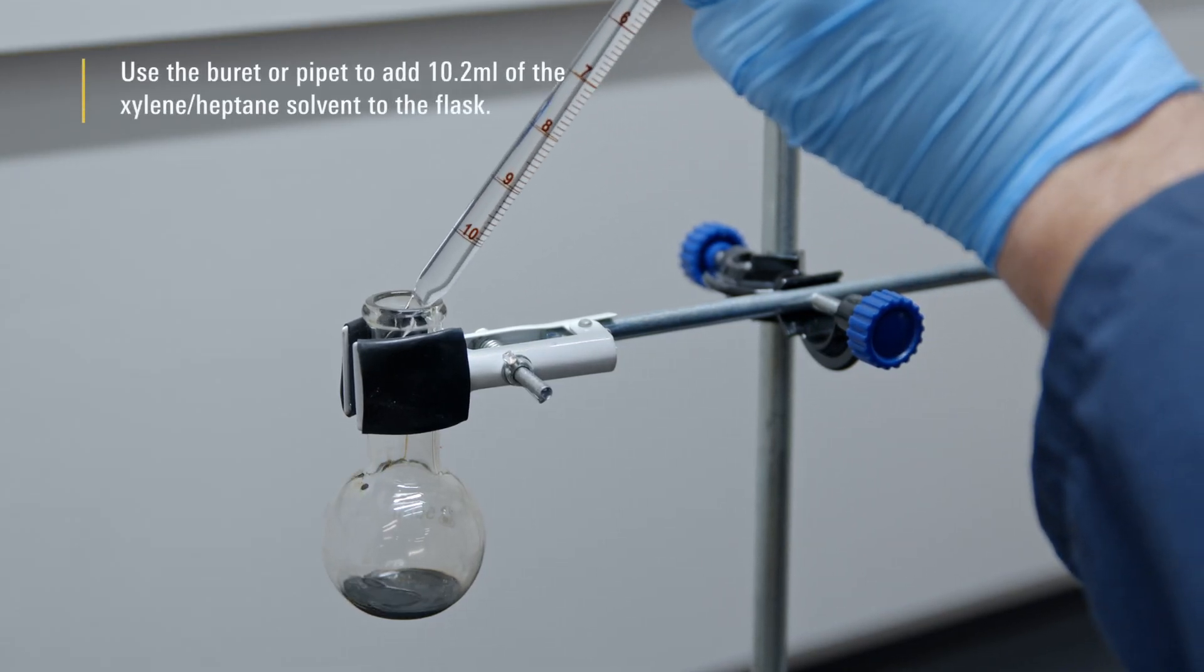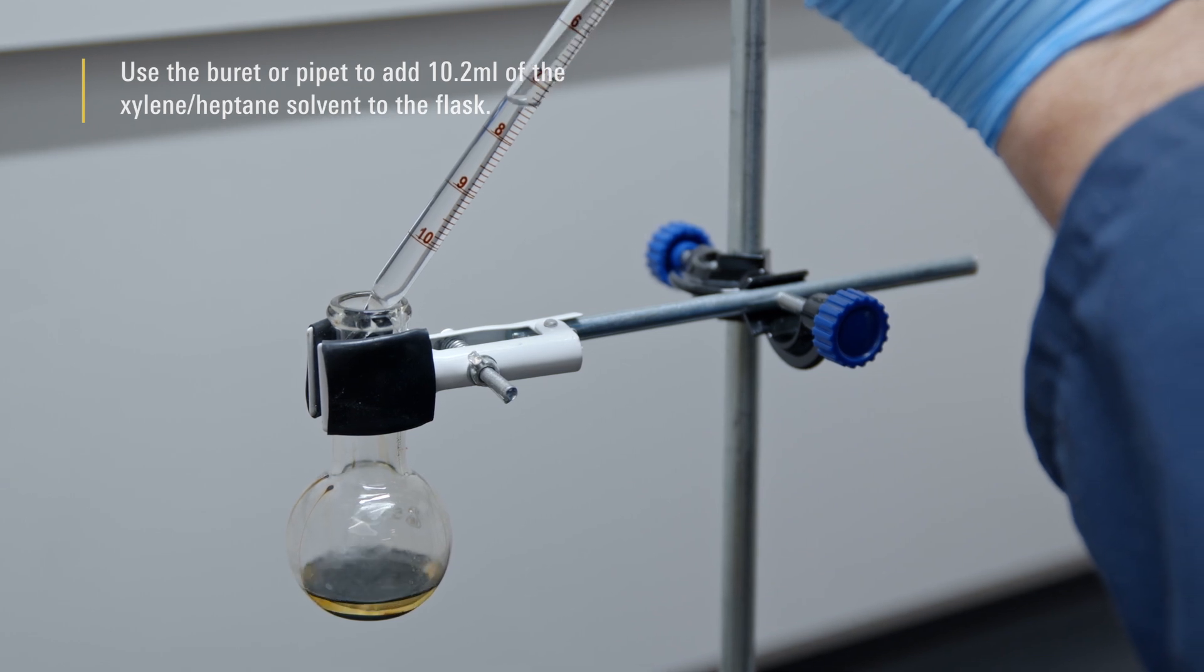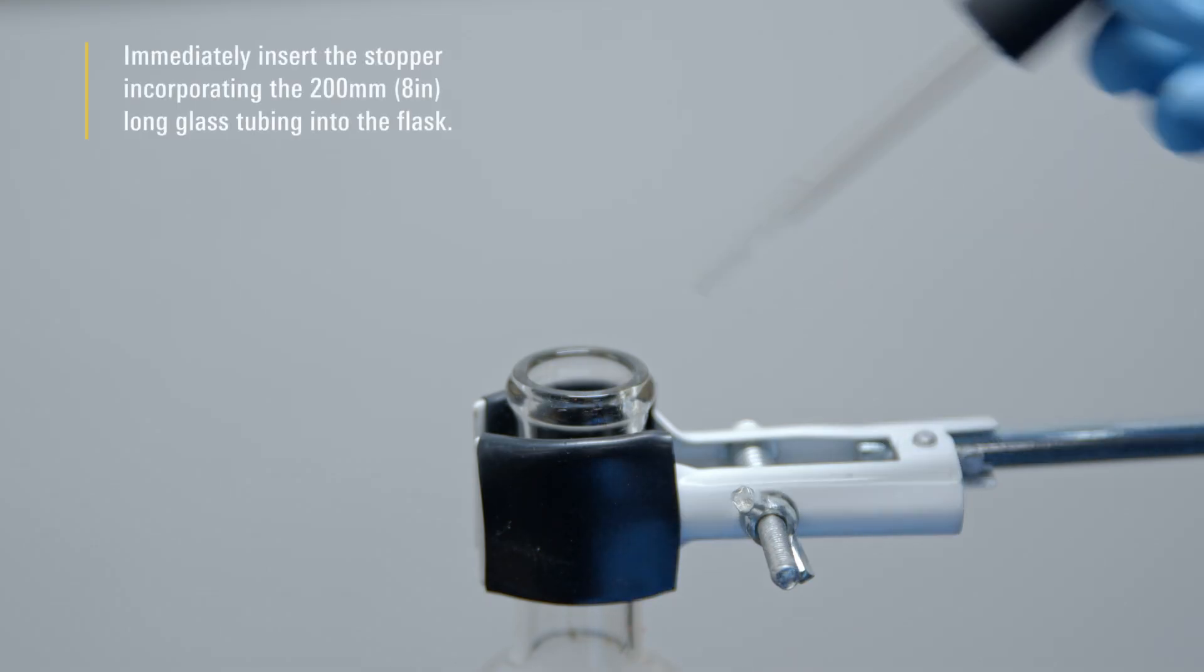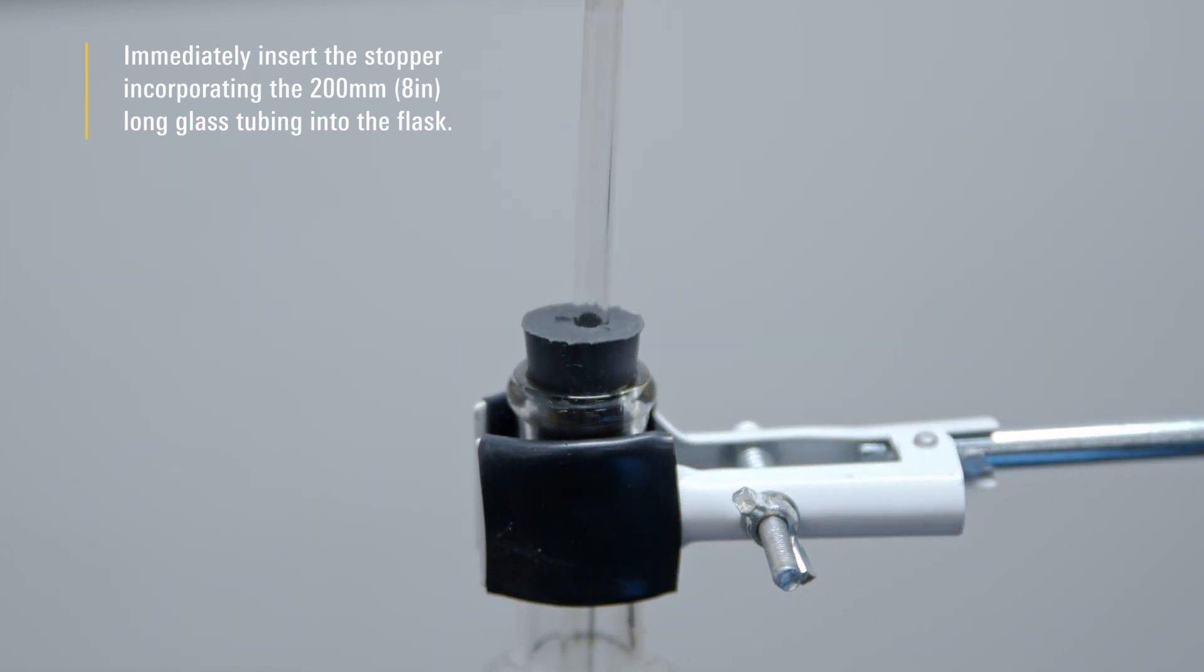Use the burette or pipette to add 10.2 milliliters of the xylene heptane solvent to the flask. Immediately insert the stopper incorporating the 200 millimeter long glass tubing into the flask.